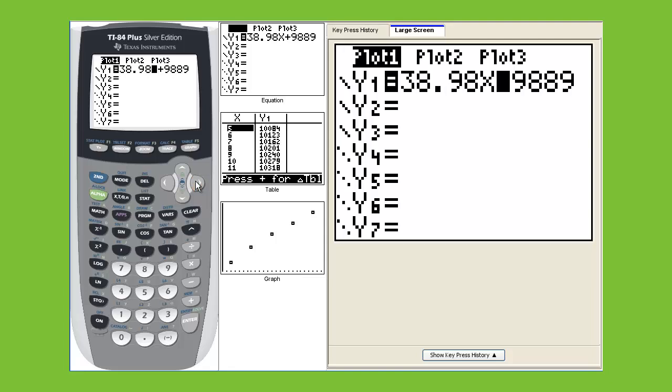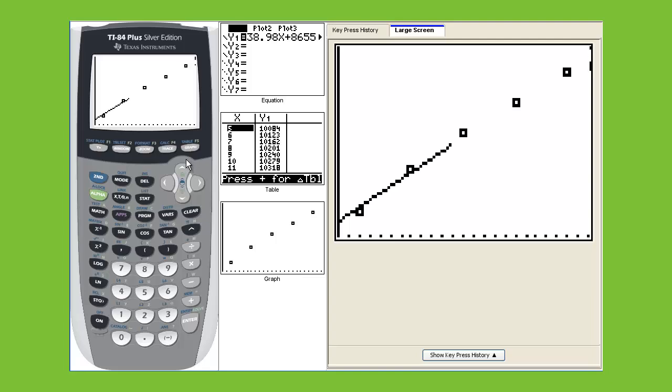Let's go to 8655.4. Then here is the graph. Here is your line that goes through this point. I would say that fits the data pretty well.